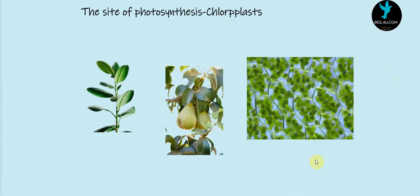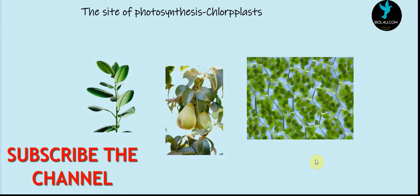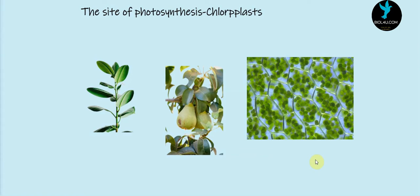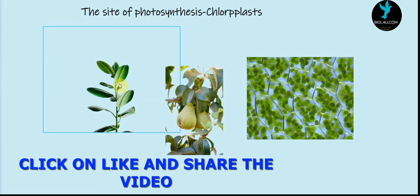Welcome to bio4u.com. Today's video we are going to study the site of photosynthesis. We studied the different experiments that led to the discovery of the final reaction for photosynthesis. Today we are going to study at which part of the plant the photosynthetic process is taking place. Photosynthesis takes place in the green leaves — here is the plant.